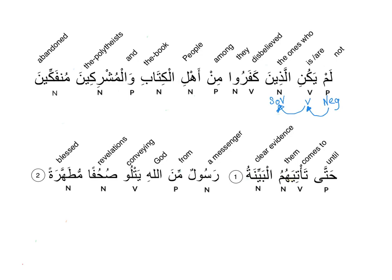A verb needs a subject of verb, which usually comes right after it. You may say that the subject of verb in terms of meaning is the whole thing — the whole phrase from al-ladhina until al-mushrikin — and you are correct. But in grammar we just choose the first one. In this case, from ladhina until mushrikin, we just choose the first phrase as the subject of verb. That is grammar in Arabic.